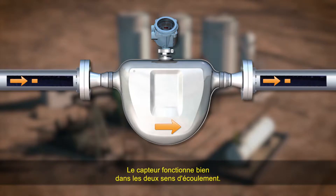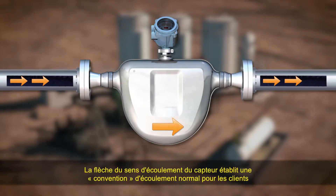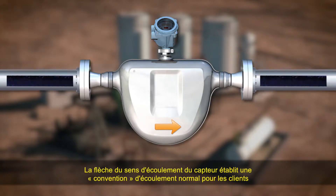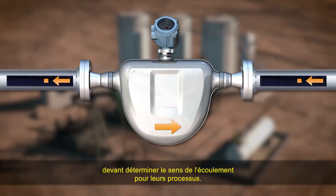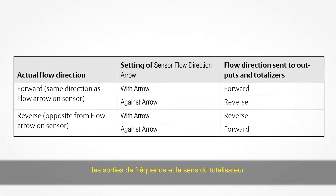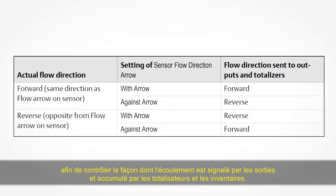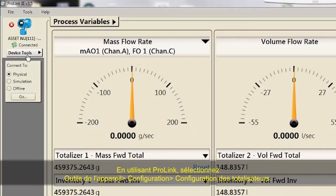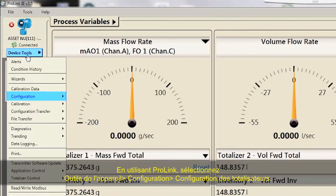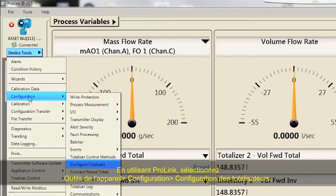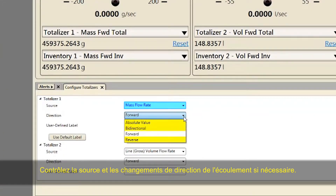The sensor works equally well with flow in either direction. The sensor flow direction arrow establishes a convention of forward flow to accommodate customers who need to define forward and reverse flow for process purposes. It interacts with milliamp outputs, frequency outputs, and totalizer direction to control how flow is reported and accumulated. Using ProLink, select Device Tools > Configuration > Configure Totalizers. Verify the source and change flow direction as needed.